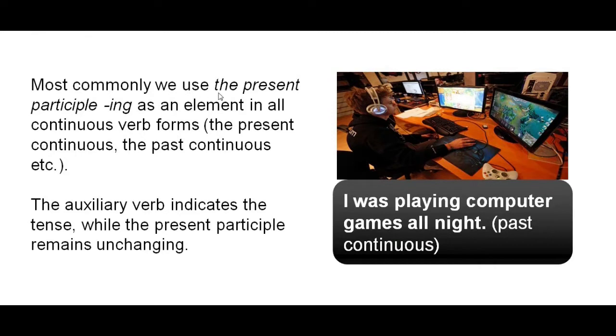Most commonly we use the present participle -ing as an element in all continuous verb forms: the present continuous, the past continuous, etc. The auxiliary verb indicates the tense while the present participle remains unchanged. Have a look at the example. I was playing computer games all night. This sentence is in the past continuous: was playing.